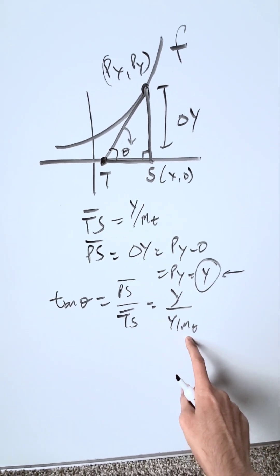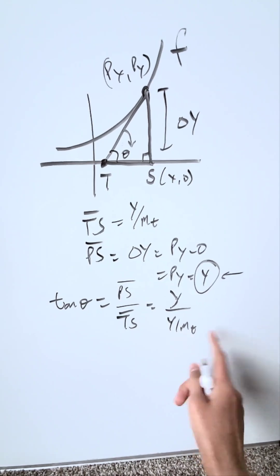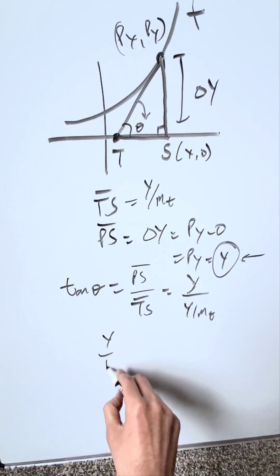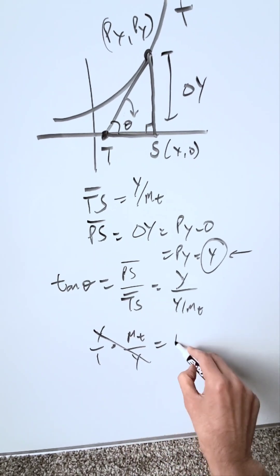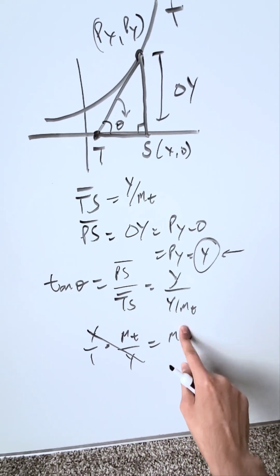Solve this. mt here is just an abbreviation for slope of a tangent. You have y over 1, and you're flipping this fraction around, mt over y. These cancel out, and you have here mt, slope of a tangent line.